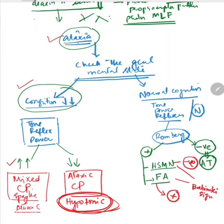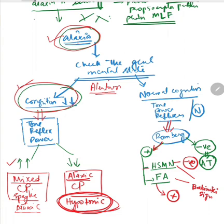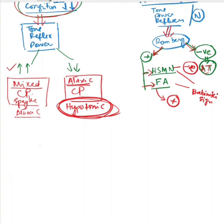Now you see it's simple. You have found that the patient has ataxia. Check his alertness. If alertness is decreased, check tone, power, and reflexes. If increased, you have mixed CP; if decreased, you have ataxic CP. If the patient is alert and well, do Romberg. If Romberg is positive, consider HSMN or Friedrich ataxia. If negative, look for ataxia telangiectasia or other causes of cerebellar ataxia.